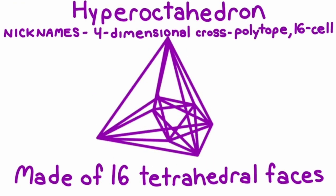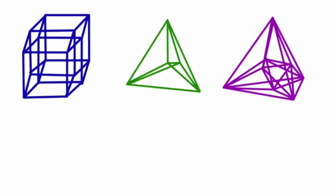We can also put four tetrahedra around a shared edge to create a new corner. This corner, used multiple times, creates a hyper-octahedron made of 16 tetrahedral faces.